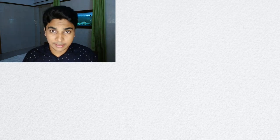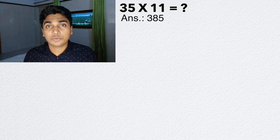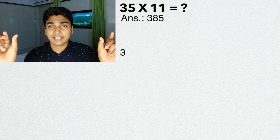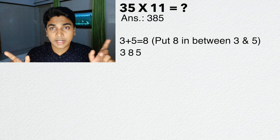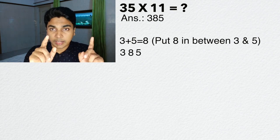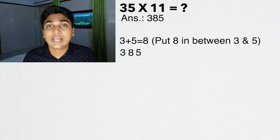What is 35 times 11? The answer is 385. How I got it? I wrote 3 at the beginning and 5 at the last. Add 3 and 5 together and write in between. You get 3, 3 plus 5, 8 and 5. You get 385.